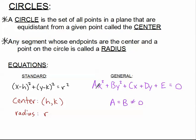In general form, we like the quadratic terms to come first (x², y²), then the linear terms (x, y), and then any constant, all equal to zero. That is your general form.